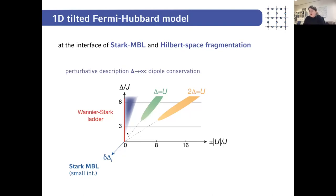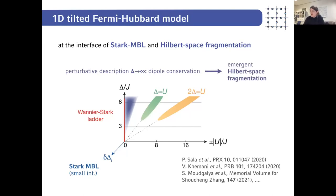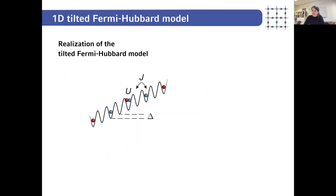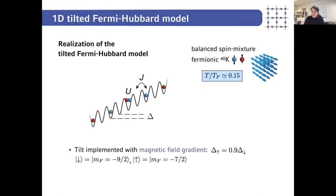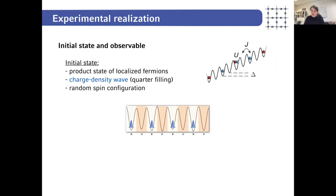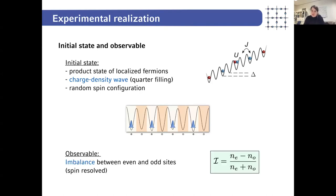We started to look at this problem experimentally first in a rather low tilt regime. Our system is realized with fermionic potassium atoms at a temperature T over T_F on the order of 0.15. We work with two different Zeeman states to implement spin, and there is a small spin dependence of the tilt between neighboring sites. We also have a Feshbach resonance that allows us to tune U.